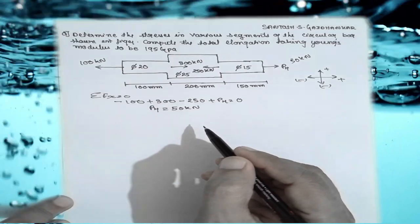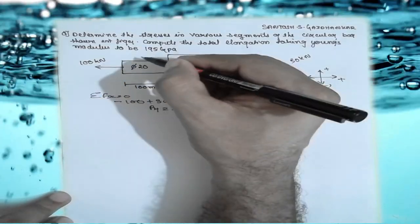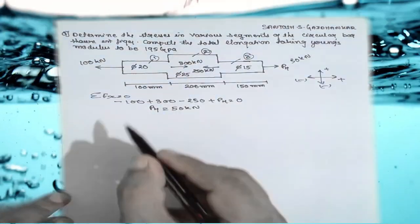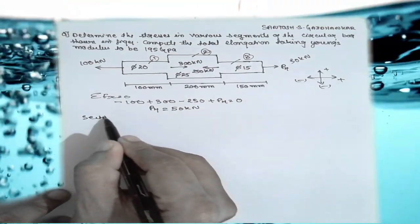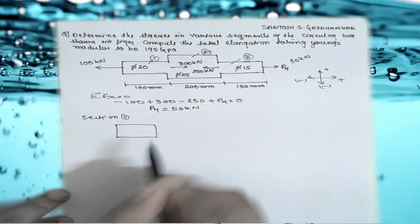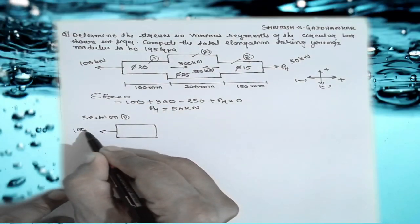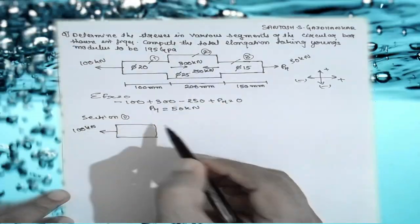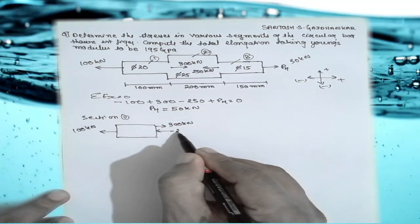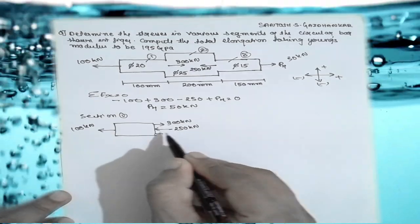Now we have to find the stresses in each segment. I will consider three sections: section 1, section 2, and section 3. For section 1, the forces acting are 100 kN, 300 kN, 250 kN, and P4 = 50 kN.